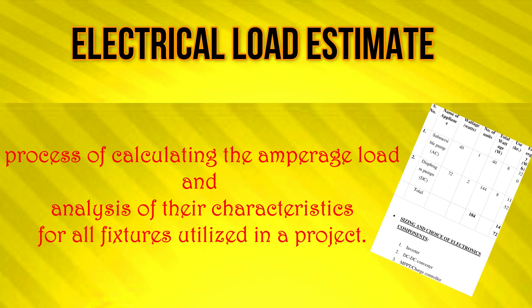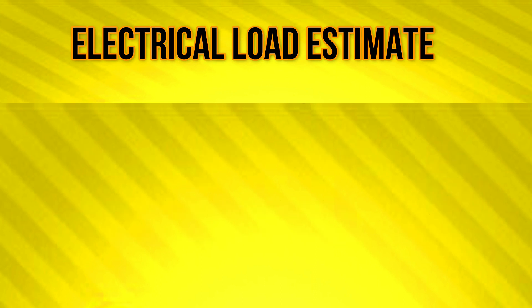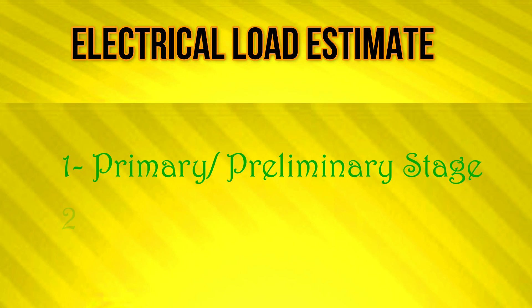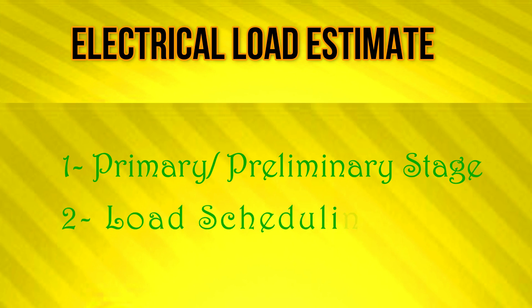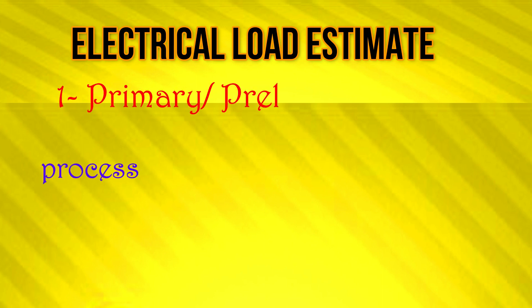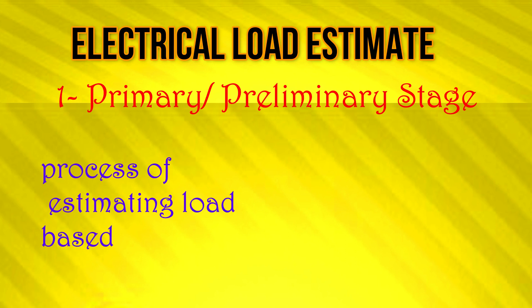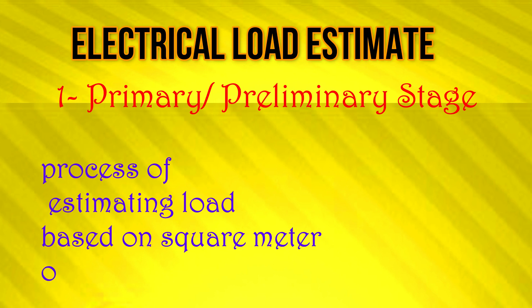It has two stages or methods: the primary or preliminary stage and the load scheduling stage. The first stage, which is the primary stage, involves determining the total load of any project by using the standard electric load per square meter or square footage.